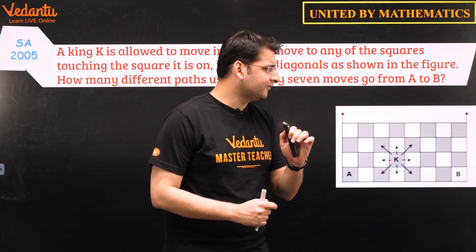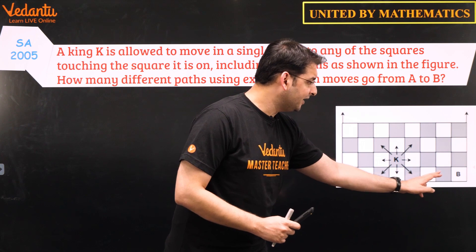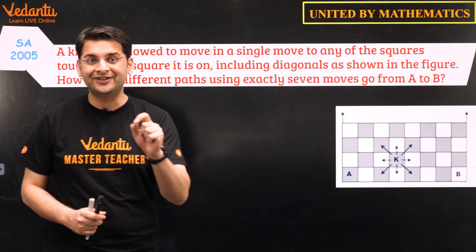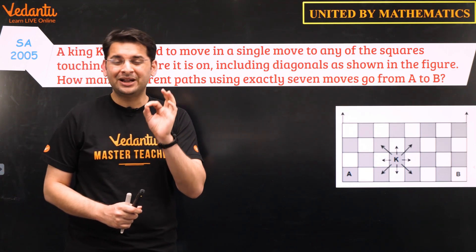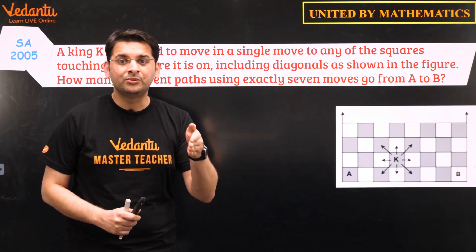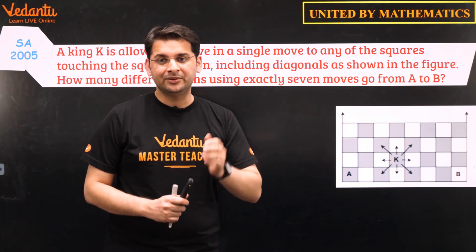So let us count the number of columns from A to B first. So there are 1, 2, 3, 4, 5, 6 and 7. So 7 columns from A to B and there are exactly 7 moves. So that means by logic, by pure logic, the king will move one column towards right in every move. It has to shift column towards right in every move.